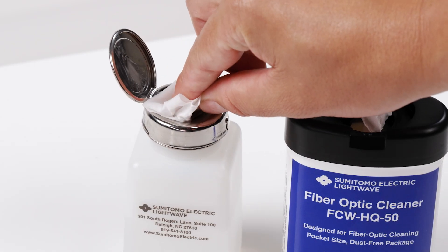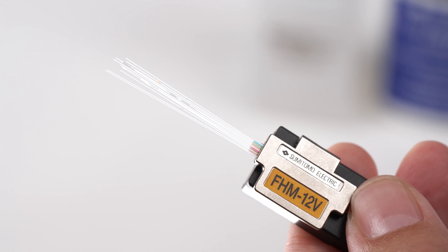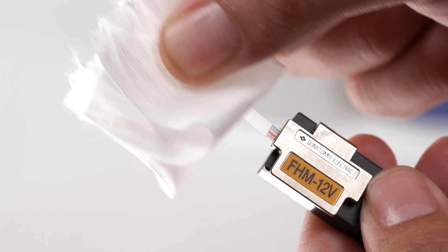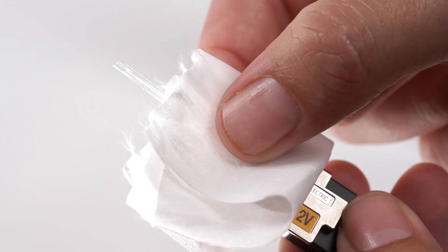Clean the stripped ribbon fiber by moistening a lint-free cloth with fiberglass cleaner. Use the cloth to remove the buffer residue, exposing a clean cladding layer.